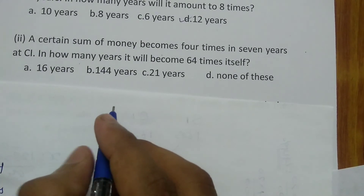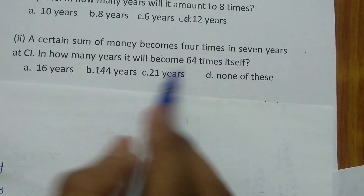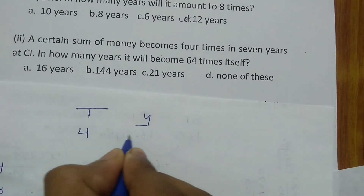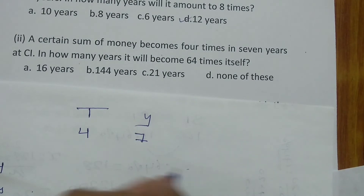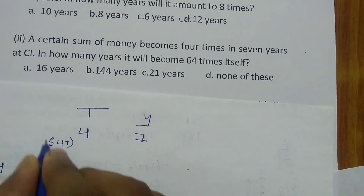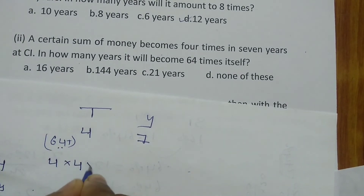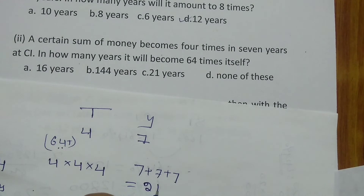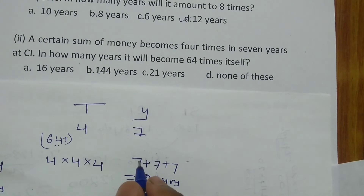A certain sum of money becomes 4 times in 7 years at compound interest. In how many years will it become 64 times? Represent 64 in terms of 4: 4 × 4 = 16, and 16 × 4 = 64. On the right-hand side: 7 + 7 + 7 = 21. So in 21 years the amount will become 64 times.